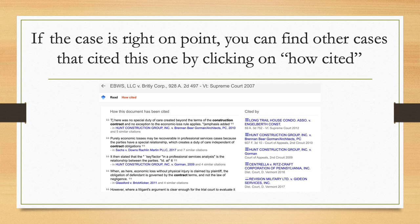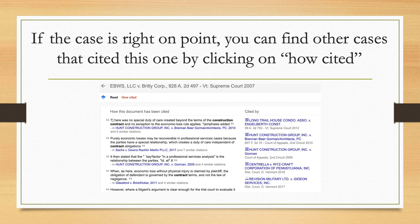Once you find a case that's right on point for what you're looking for, you can find other cases that cited that one by clicking on the word 'How Cited,' which is up in the left-hand corner next to the word 'Read.' You'll see the case name — in this example, EBWS LLC versus Britley Corporation, a 2007 case in the Vermont Supreme Court — remains up there, and what you're looking at is a list of other cases that cited this case, showing where the Vermont Supreme Court or other courts look to this case as precedent.